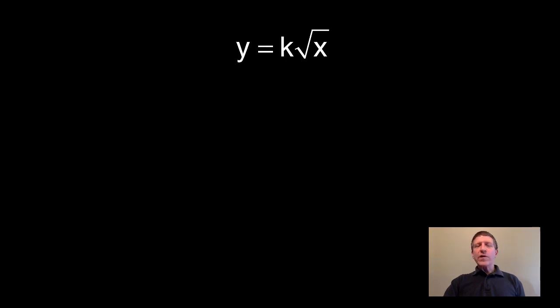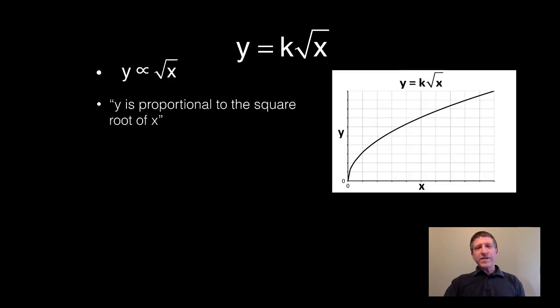Yet another common relationship, y equals k times the square root of x. When you see this, you could say y is proportional to the square root of x. You should note though, very importantly, you can express this as a square relationship. Notice if I square both sides of what I have above, you get y squared is proportional to x.